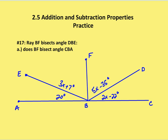We've got two problems for you. The first one is a two-part question — problem number 17. Ray BF bisects angle DBE. So because Ray BF bisects angle DBE, we know that 3x plus 7 is going to be equal to 5x minus 35.